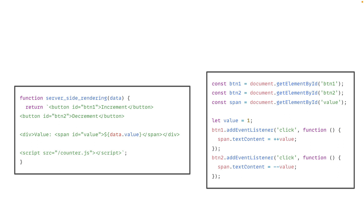What happens if you accidentally make an alteration — like modifying the ID on the server-side render code — then on the client-side code it will probably break because you couldn't find the element by that ID. Just hold this thought; we're not going to go through practices on how to prevent this in this video. But this is just food for thought.